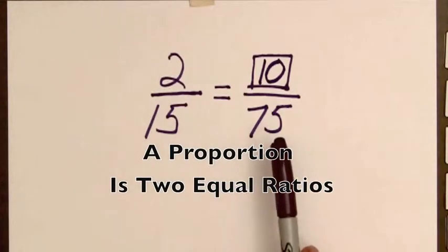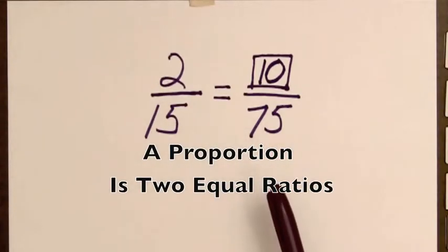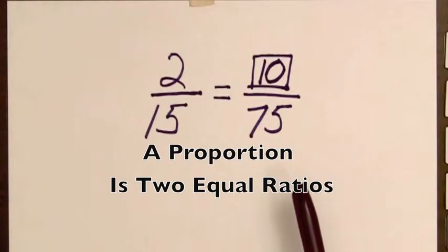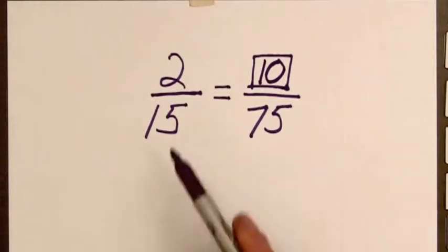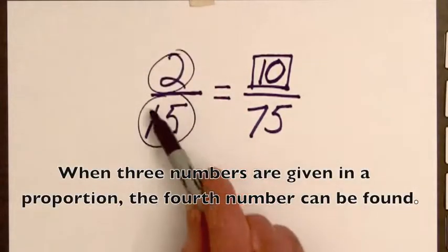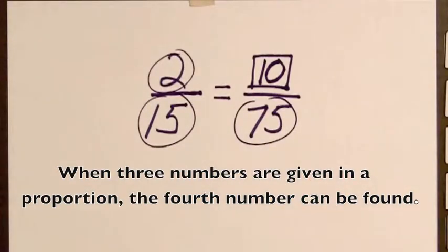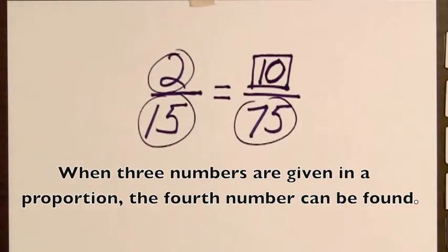Two equal ratios is called a proportion. Proportions occur in solving problems frequently in mathematics, and when three of the four numbers are known, any three of the four, the fourth number can always be found.